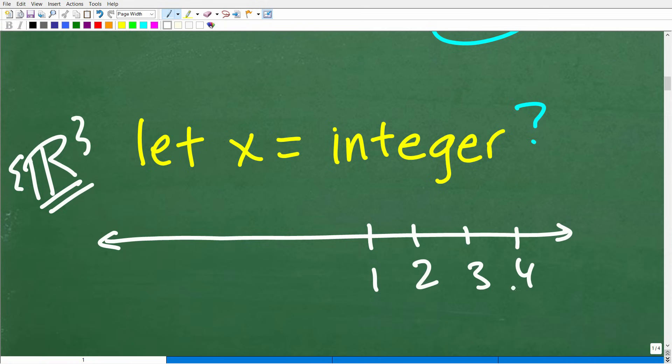The counting numbers or the natural numbers. These are a subset of the real numbers on the real number line.